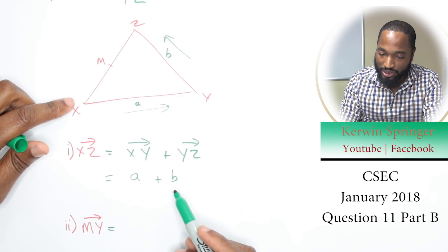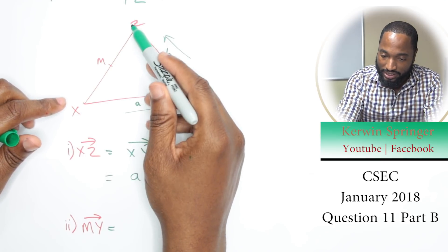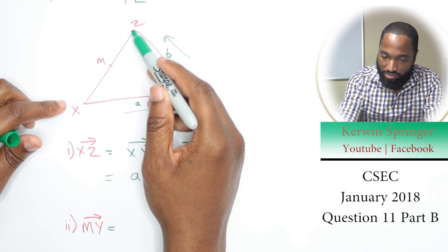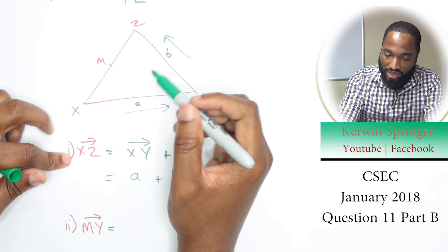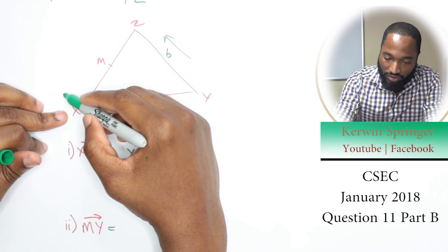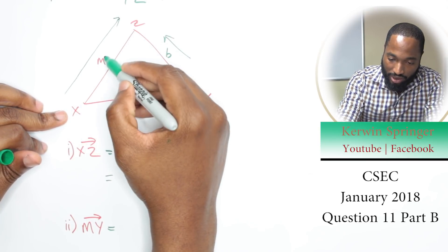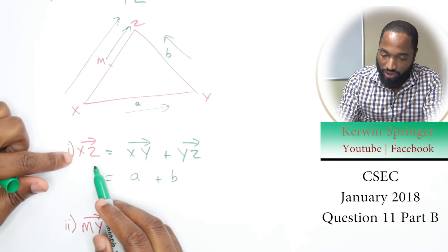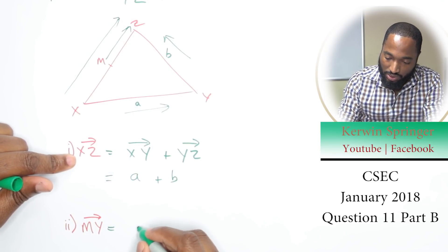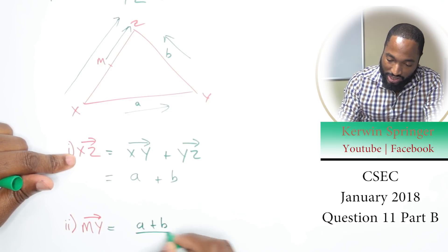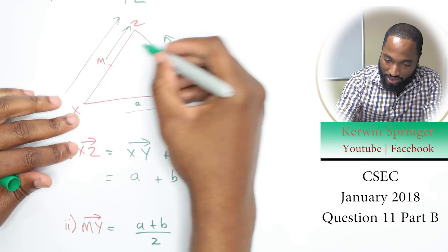M to Z is half of X to Z. We have the whole X to Z, and we have half of that. So from M to Z is half of that, which is (a + b)/2. I'm writing this because this is a piece of the whole long vector that I want. I want to go this way and then go down here. What is Z to Y?